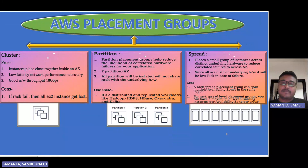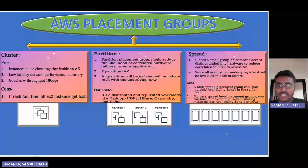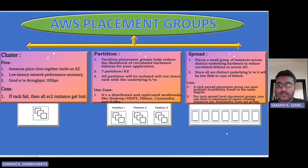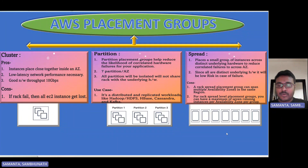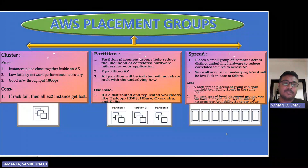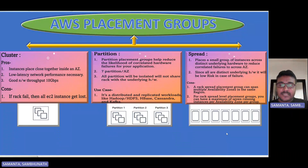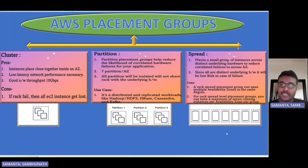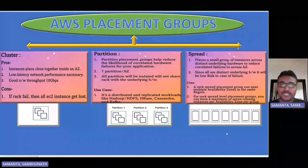There are three defined types of placement groups: cluster, partition, and spread. The cluster placement group places multiple EC2 instances in a single rack, so all instances are very close to each other. The advantage is high performance with network output up to 10 gigabytes. The disadvantage is that since all instances are on a single rack, if anything goes wrong with that rack, all EC2 instances will be lost.